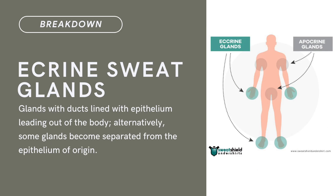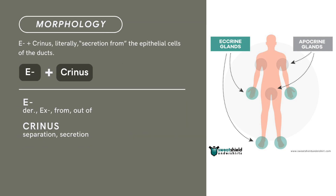Compound term: eccrine sweat glands. Brief definition: glands with ducts lined with epithelium leading out of the body. Alternatively, some glands become separated from the epithelium of origin. Term morphology: compound of e- plus crinus. Literally means secretion from the epithelial cells of the ducts. E- is derived from ex-, meaning from or out of. Crinus means separation or secretion. There you have it — compound term: eccrine sweat glands.